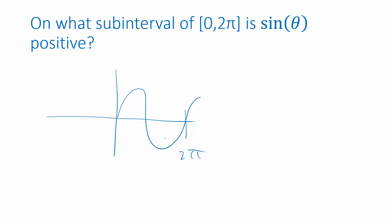And on what subset of that interval, from 0 to 2π, is this function of theta positive? Well, we can see that it's positive on this subinterval, which goes from 0 to π. So the answer is 0 to π.